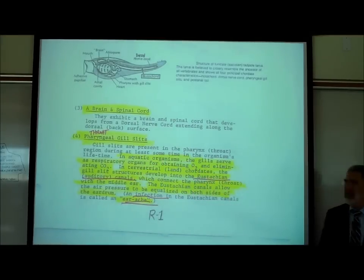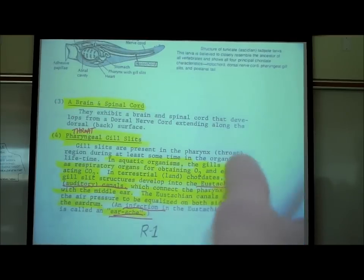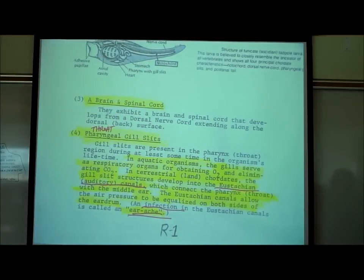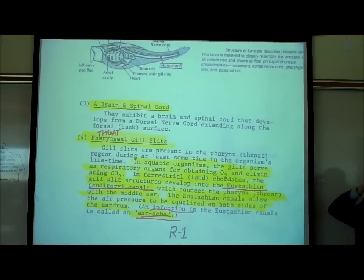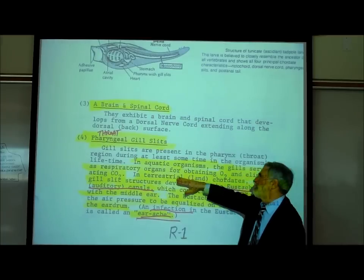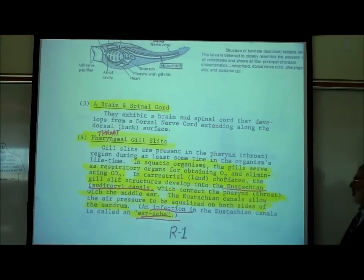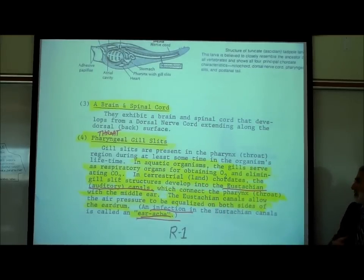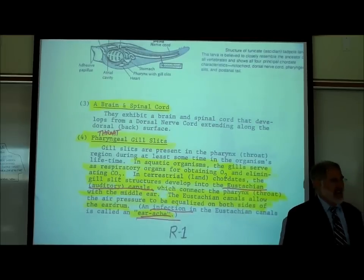The word pharyngeal means throat. Fish might have pharyngeal gill slits in their throat, but why do we say 'us'? In aquatic organisms — aquatic means living in the water — the gills are used for breathing, to obtain oxygen and get rid of CO2. In terrestrial vertebrates — terrestrial means living on land, like us — the gill slit structures develop into the eustachian canals.